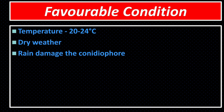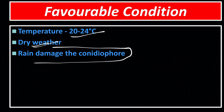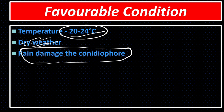Favorable Conditions for Powdery Mildew: Temperature 20 to 24 degree centigrade and dry weather. Rain damages the conidia, so excess moisture or rain is harmful to this pathogen. Dry weather with moderate temperature is favorable for disease development.